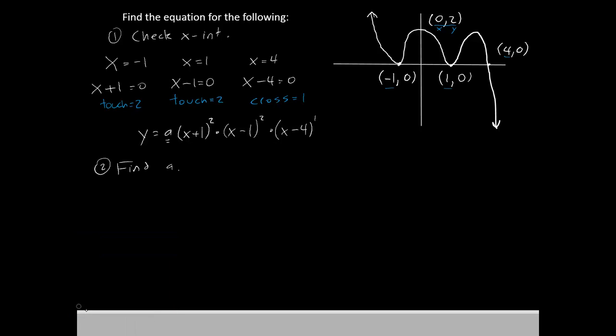Let's go ahead and try that. So instead of saying y, I'll say 2 equals a times, and then instead of x I'll say 0 plus 1 to the second power times 0 minus 1 to the second power times 0 minus 4 to the first power.